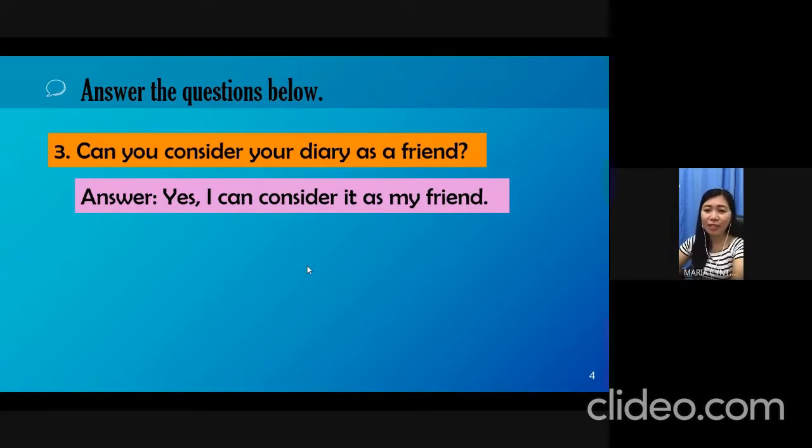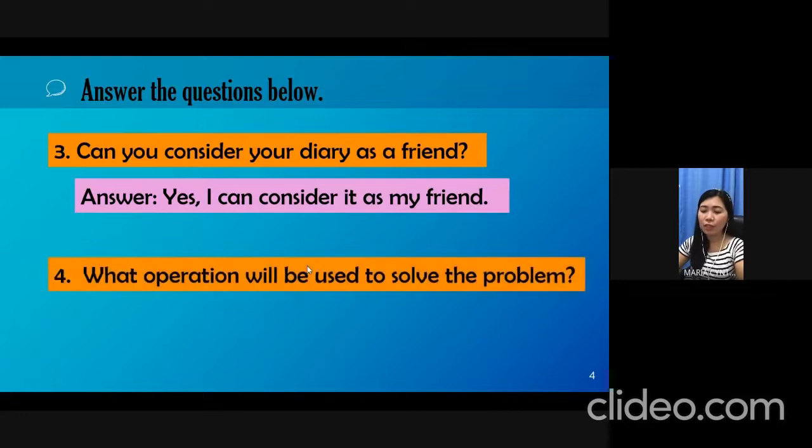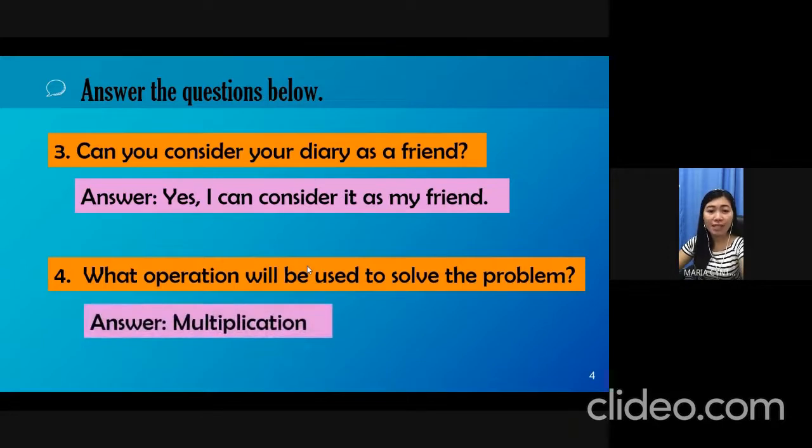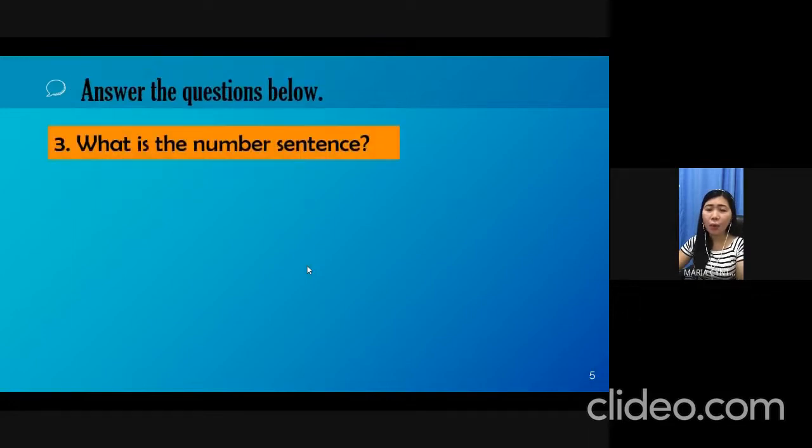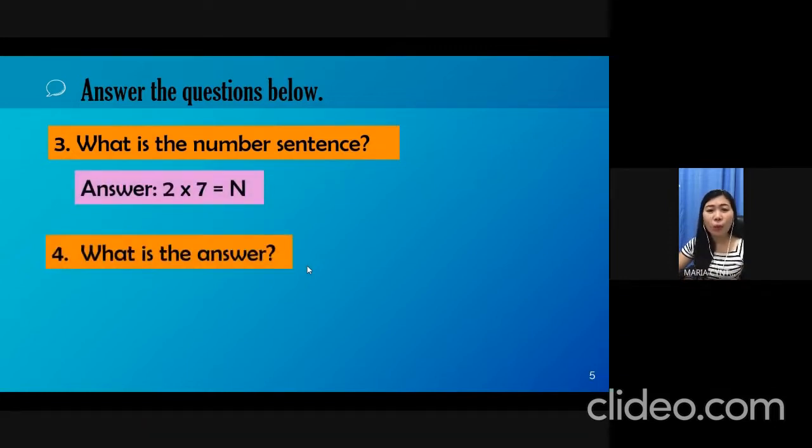Now, let's proceed to the fourth question. What operation will be used to solve the problem? Of course, the answer is multiplication. Next question. What is the number sentence? That's right. 2 times 7 equals N. Now, what is the answer?